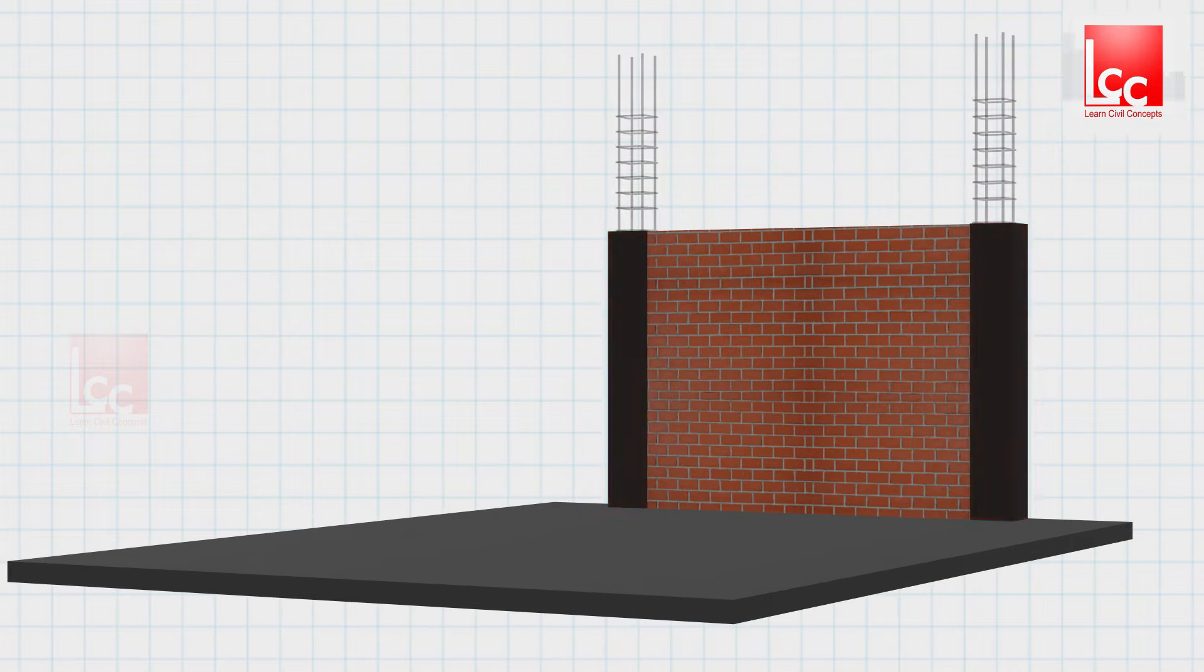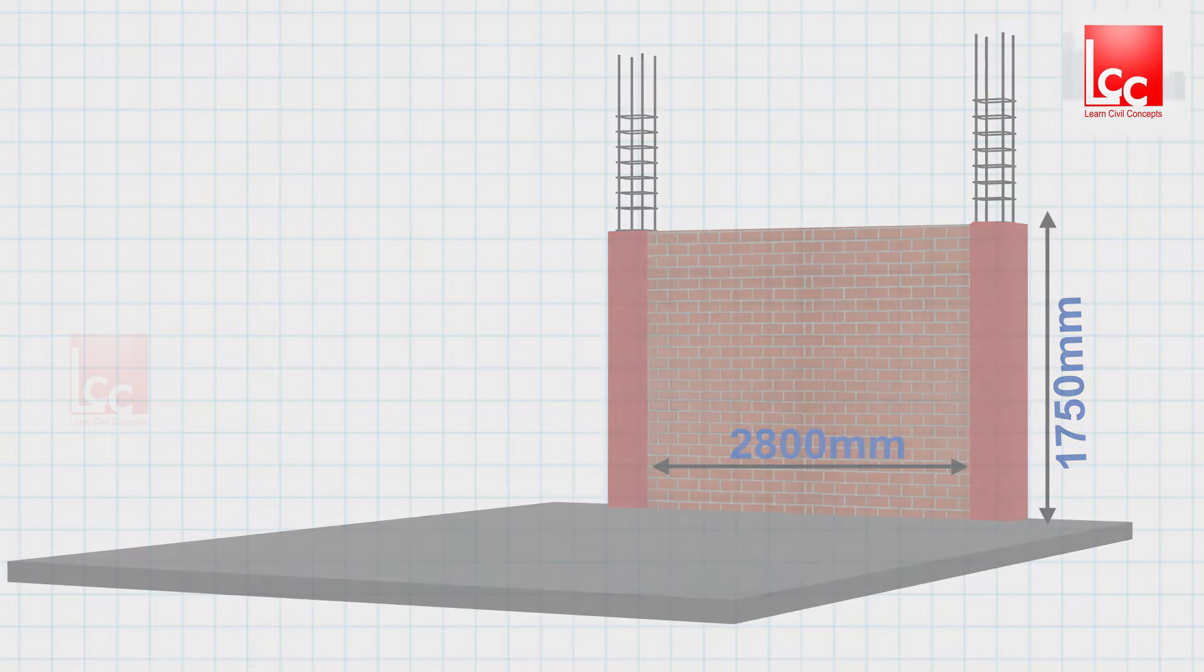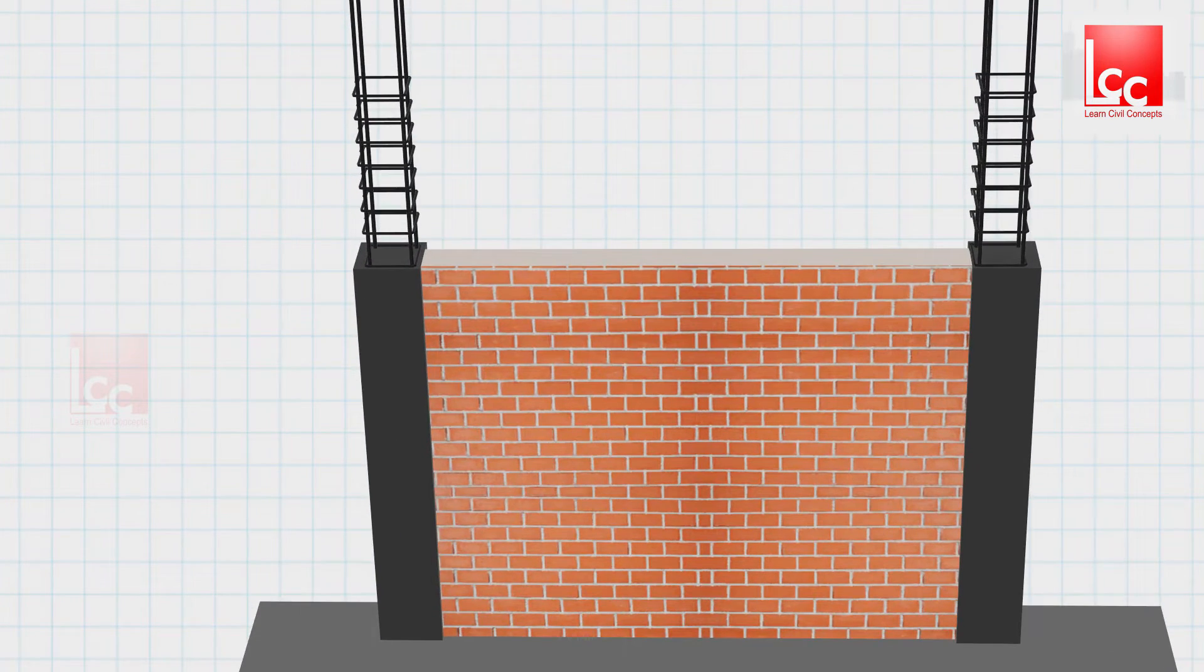Two columns with a span width of 2800mm. The height of the columns to be constructed is 1750mm. A brick wall is constructed between the columns. Above the brick wall, we have to provide a beam.